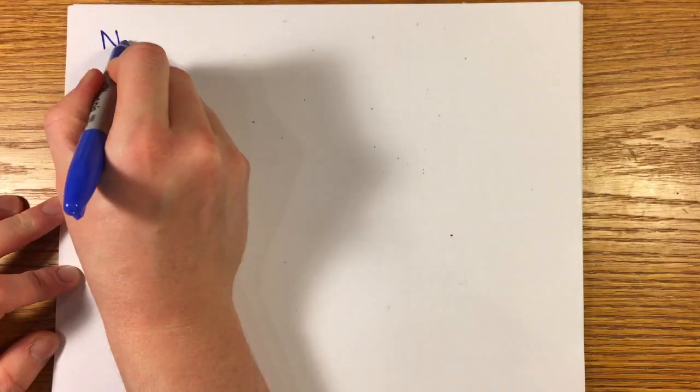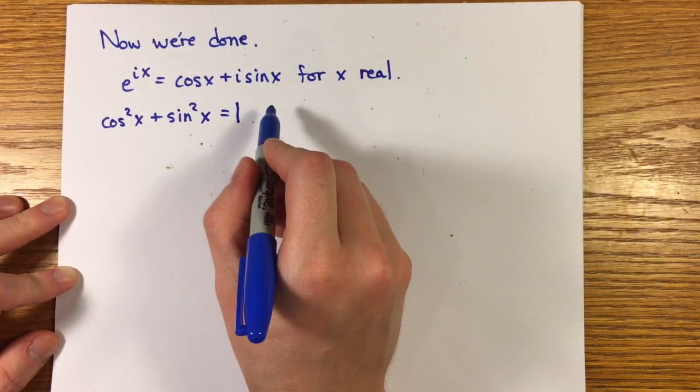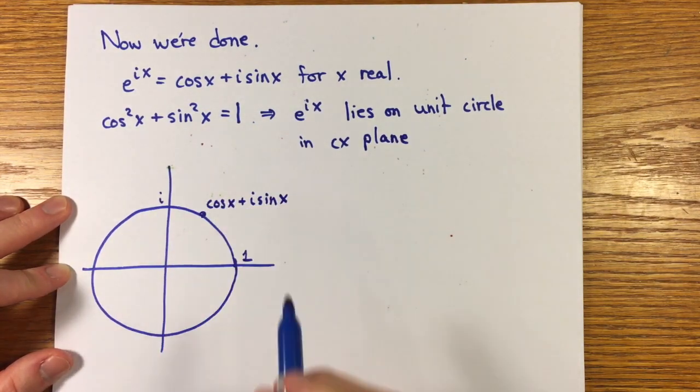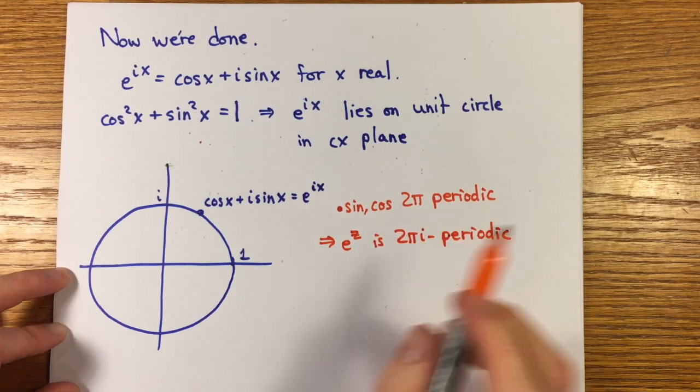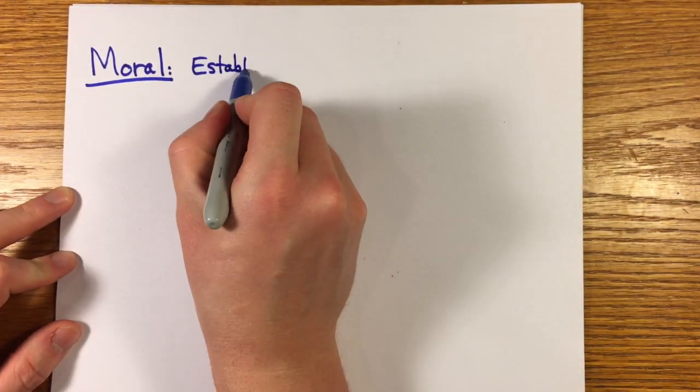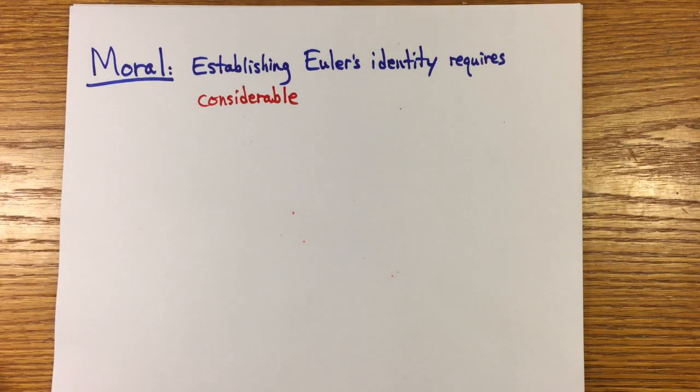Once all of this has been done, now you have Euler's identity and it's from the properties of sine and cosine that you know that exp(ix) lies on the unit circle in the complex plane and this function exp is 2πi periodic. The moral is that there's a lot to do to establish this identity, none of which can be expected of the student just learning the theory of the trig functions.